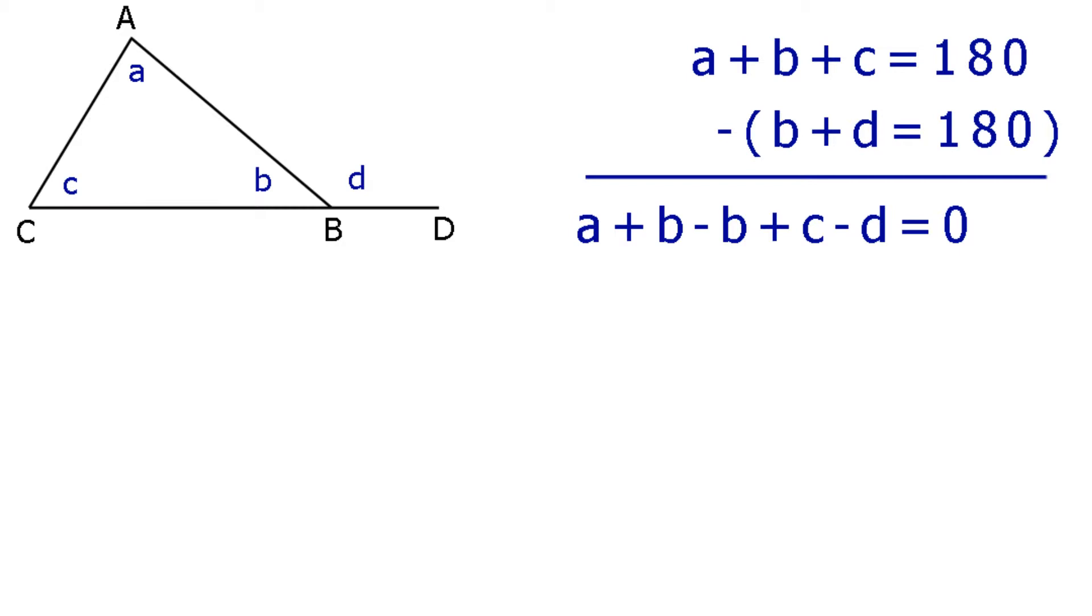If we cancel the B's, this becomes A plus C minus D equals 0. So, adding D to each side, or if you prefer, taking D to the other side and changing the sign, A plus C equals D, and there you have it, QED.